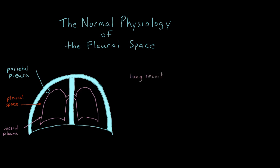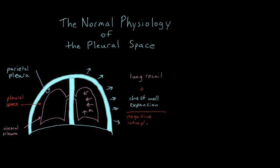The lung is made of spongy elastic tissue that has a tendency to recoil inwards, or collapse, towards the lung hilum. By contrast, the chest wall, which consists of the bony ribcage contained within the intercostal muscles, has a tendency to expand outwards. The net effect of these two opposing vectors is to create a negative pressure within the pleural space. This quantity is known as the intrapleural pressure.